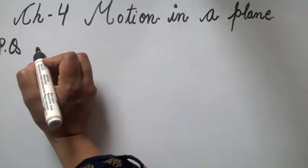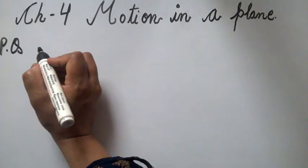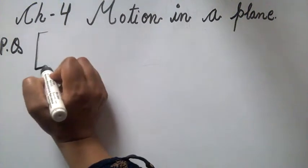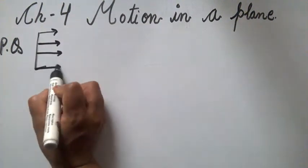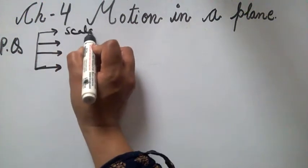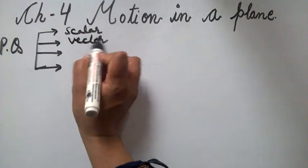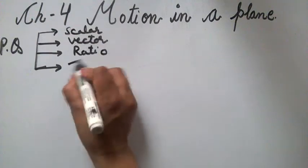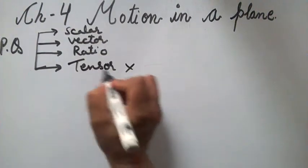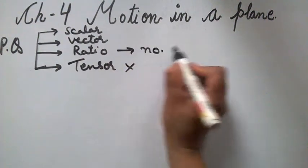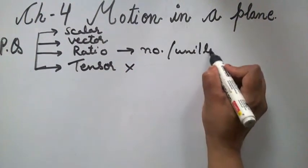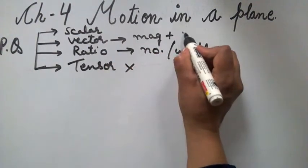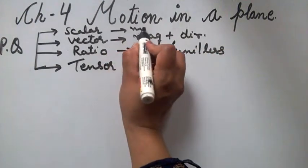As we know, physical quantities are of four types. One is scalar, another is vector, third one is ratio, and the fourth one is tensor. Scalar has only magnitude and vector quantities have magnitude as well as direction. Ratio has only a number and is unitless. Tensor has a number of directions at different positions and is not in our course, so we will not study it.